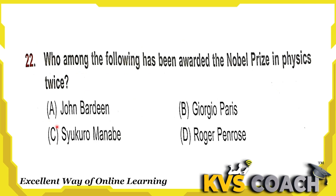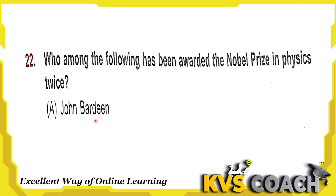Next question: who among the following has been awarded the Nobel Prize in Physics twice? They all are awarded with Nobel Prize in Physics, but twice is awarded by John Bardeen. John Bardeen is the physicist who was awarded the Nobel Prize twice.